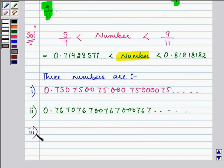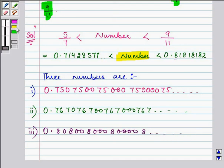And let us think of a third number which may be in 8 line and that can be 0.80800800800008 and which will again go on. So, these are the three numbers which we have given to you and there can be a lot many numbers that you can think of but it should be more than 0.714 and so on and less than 0.818 and so on.